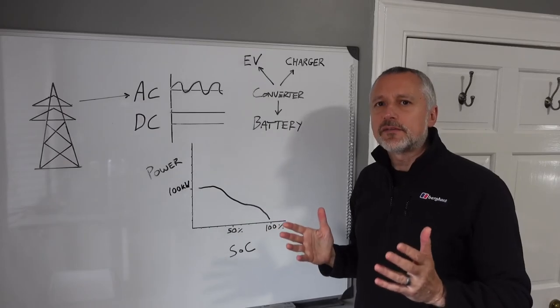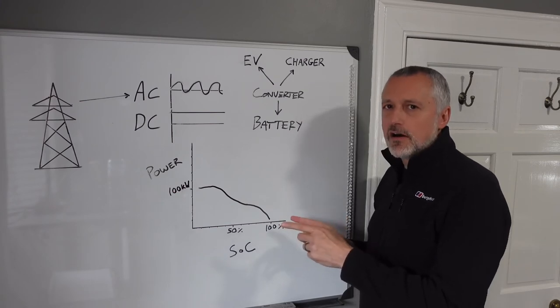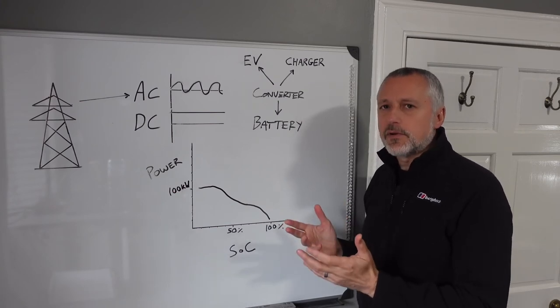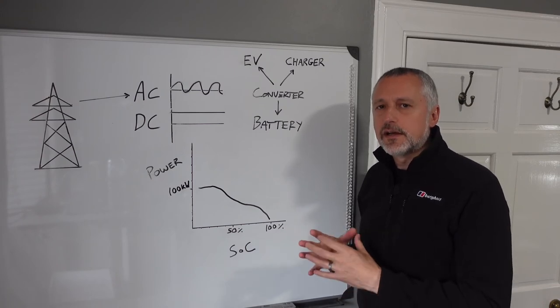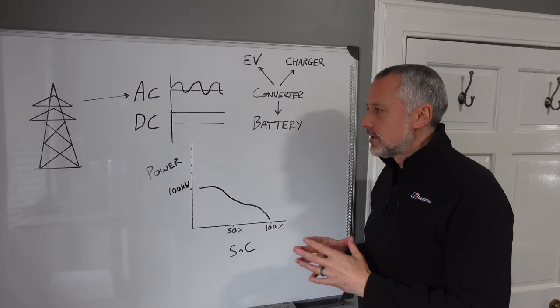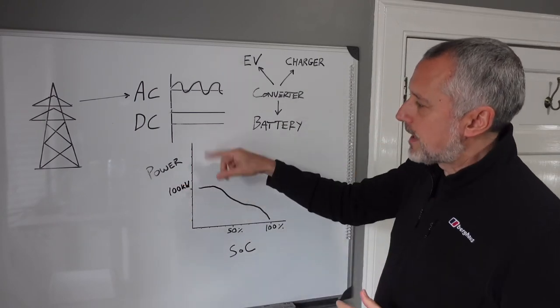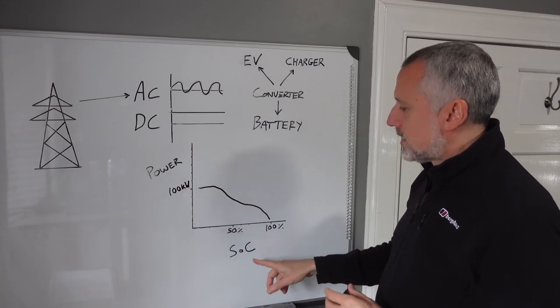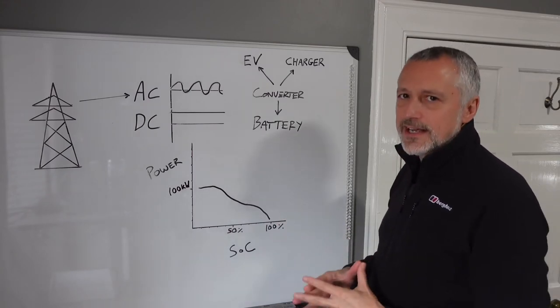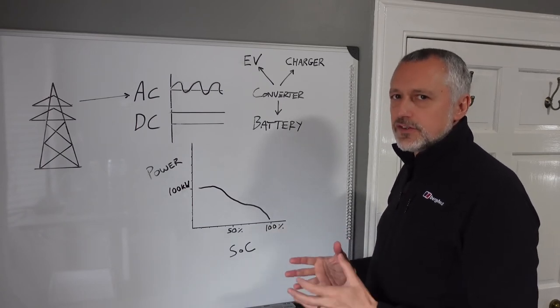So let's have a look at what happens on a charge now using this graph and then to explain the charging curve. I'm going to use the example of the Jaguar I-PACE in this case, which takes a maximum speed of 104 kilowatts. Looking at the graph, you've got power on this side, so that's the maximum power charge it delivers, and then at the bottom you've got the state of charge, which is where your battery is when you turn up to the charger. So what percentage of the battery is charged.